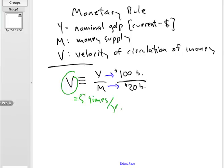If you have 20 billion dollars worth of money and each piece of money is used five times, then that money supply of 20 billion is enough to buy a hundred billion dollars worth of goods and services.